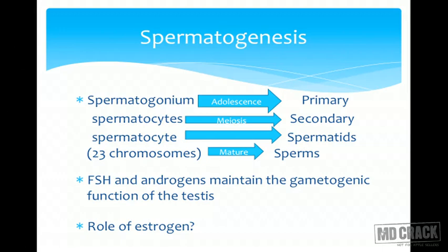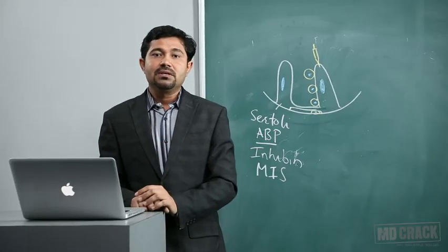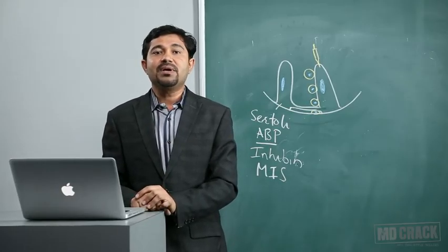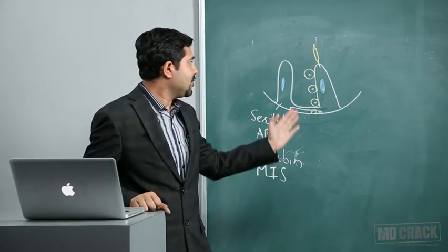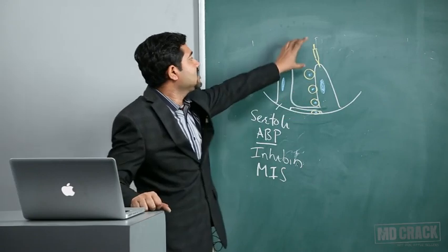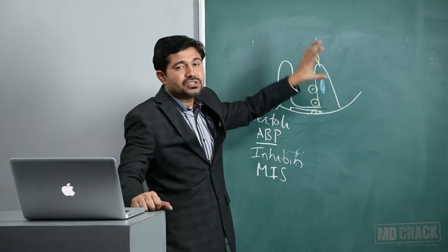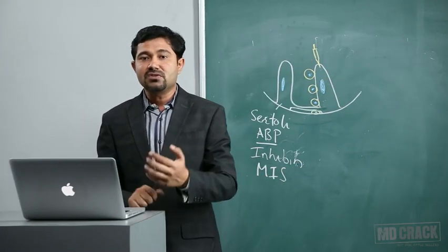A very high level of testosterone (androgens) is required for spermatogenesis. Estrogen also has a role — it is formed by aromatization of androgens — and some level of estrogen is maintained in the lumen, so estrogen is also required for spermatogenesis.